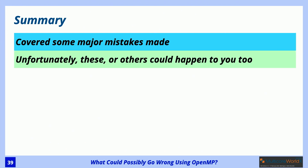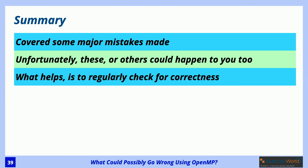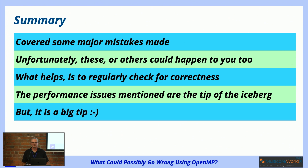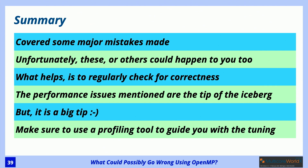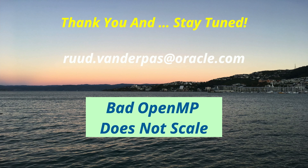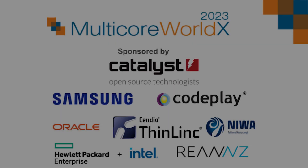Summary: I discovered some major mistakes — they could happen to you too, they happened to me as well. Check for correctness; very often people blindly parallelize code, so make sure checking correctness is part of your methodology. The performance issues I showed are just the tip of the iceberg, but it's a fairly big tip. Use a profiling tool to guide you. And finally, my hobby horse: if somebody tells you OpenMP doesn't scale, just correct that person — bad OpenMP does not scale. That's the message I'm trying to convey. Thank you very much.